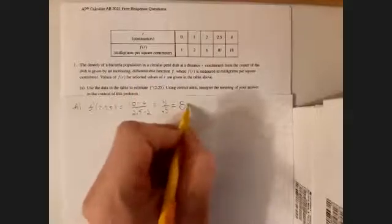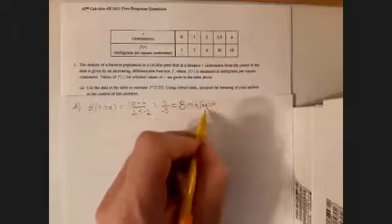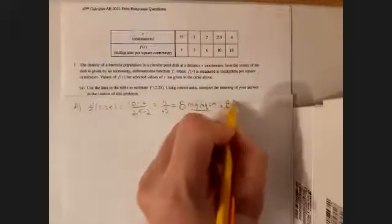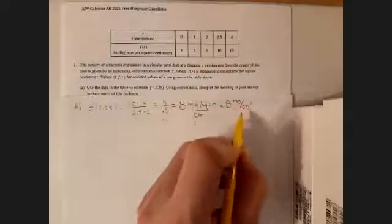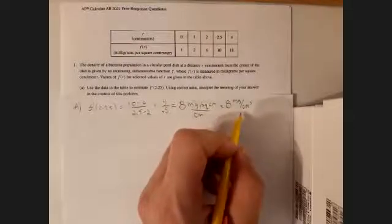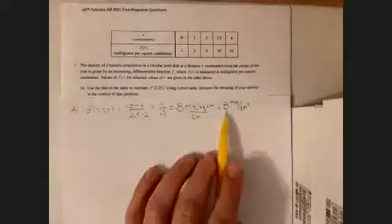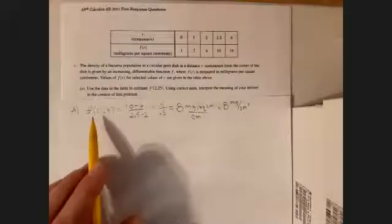Now, the units on this would be the units for 4, which is the change in f of r, which is milligrams per square centimeter per the units for 0.5, which is centimeters. So the units you could simplify to 8 milligrams per cubic centimeter. Now, that's not the interpretation. Be careful there. I've had students just report units instead of reporting the entire interpretation. I'm going to verbally speak it. I'm not going to take the time to write it all out. But this is the interpretation for what f prime means. You have to interpret not only what the 8 means, but in the context of the 2.25 as well. So this would be: the density of the bacteria population in the Petri dish is increasing, because the rate of change is positive, is increasing at a rate of 8 milligrams per centimeter cubed at 2.25 centimeters from the center of the Petri dish.